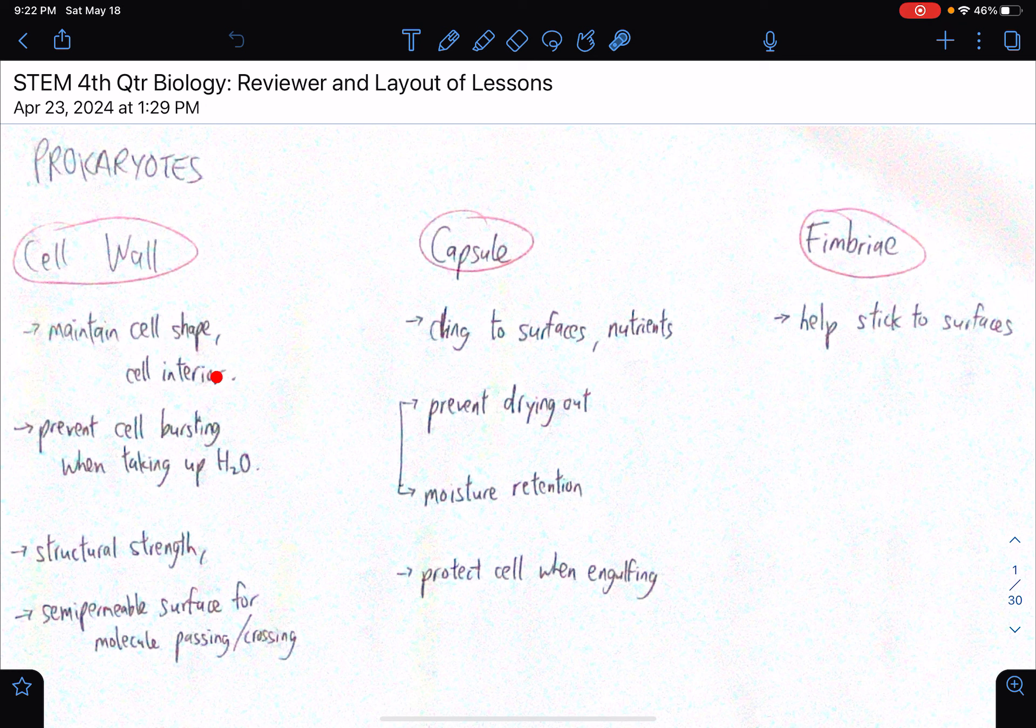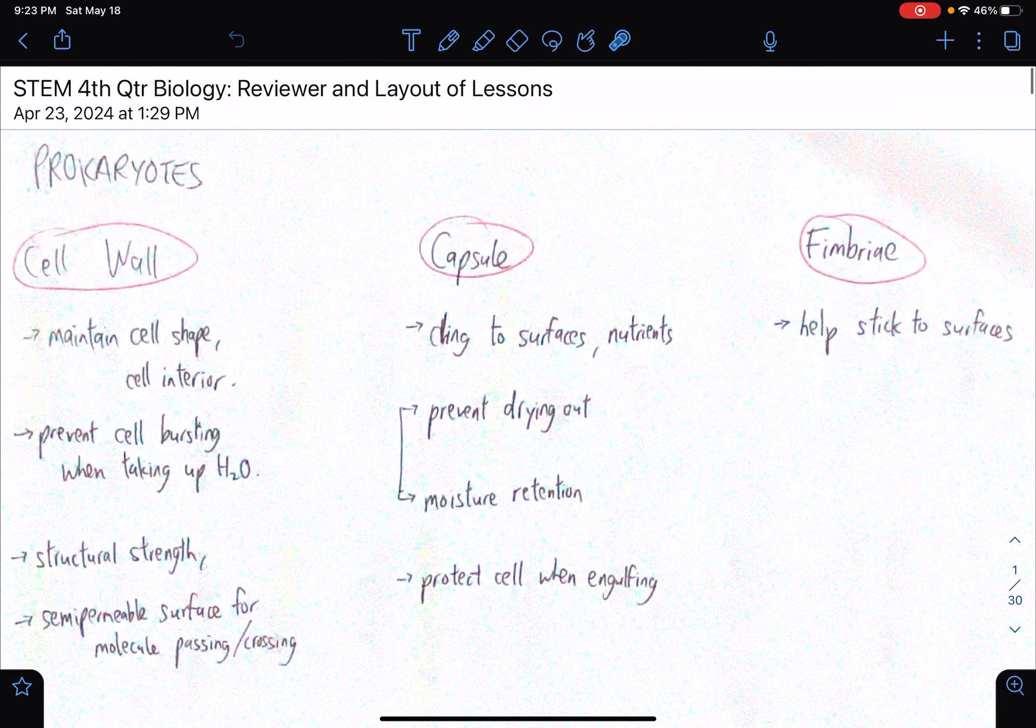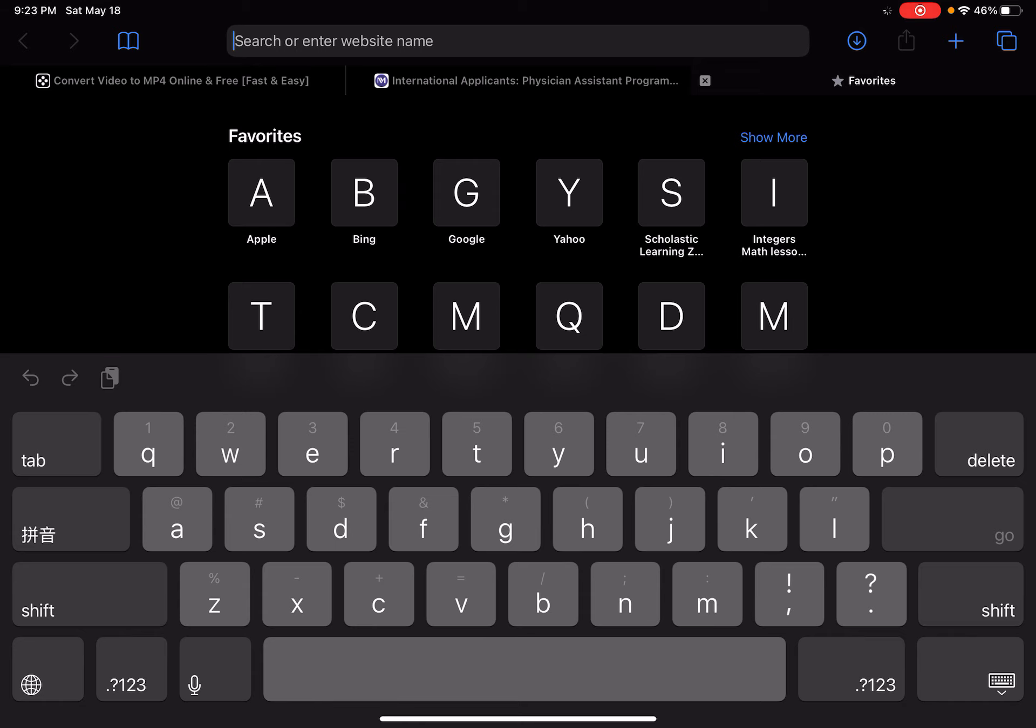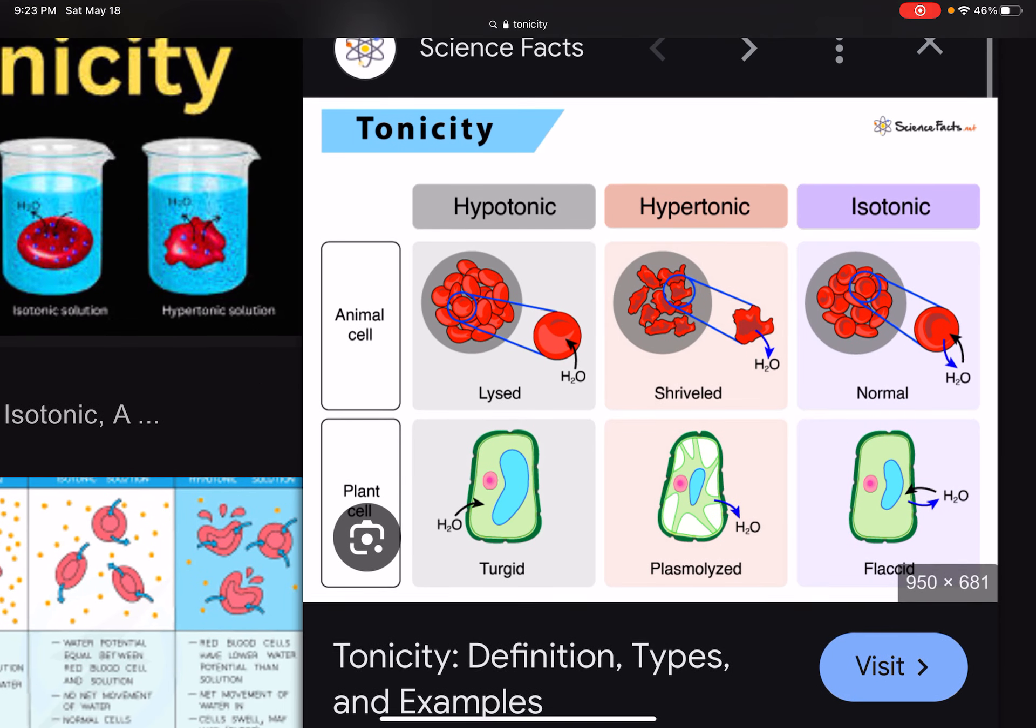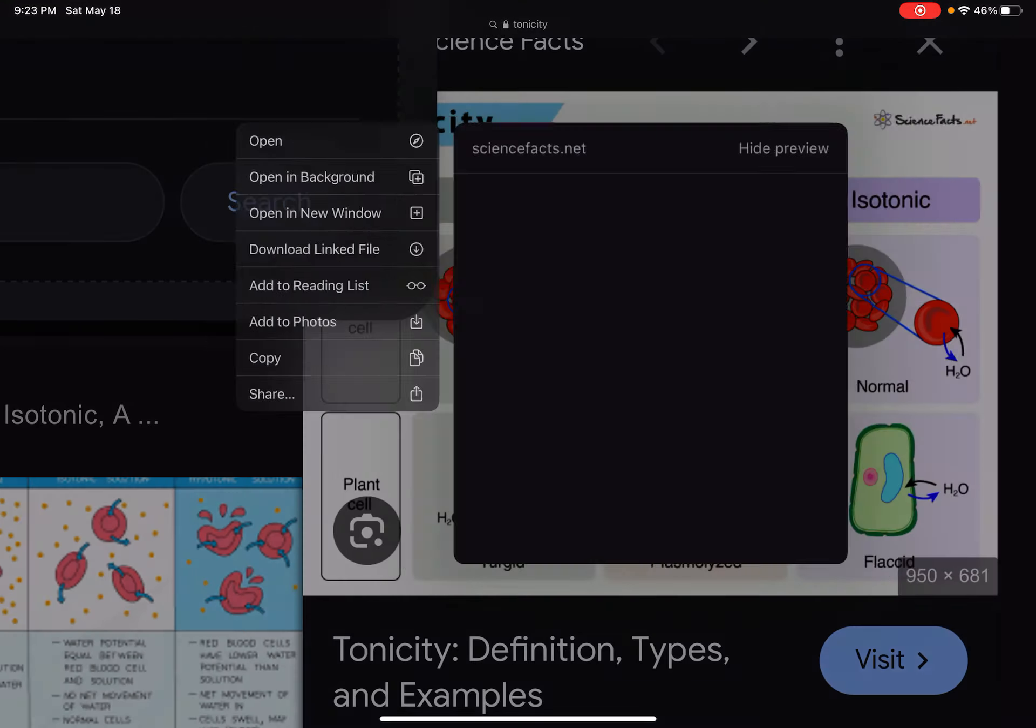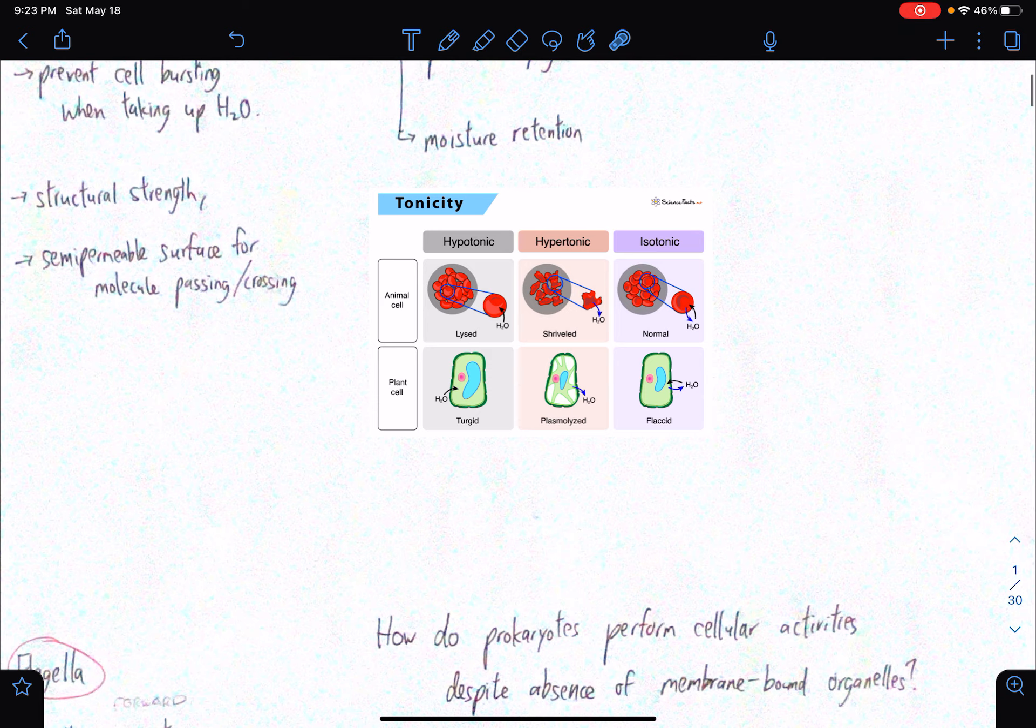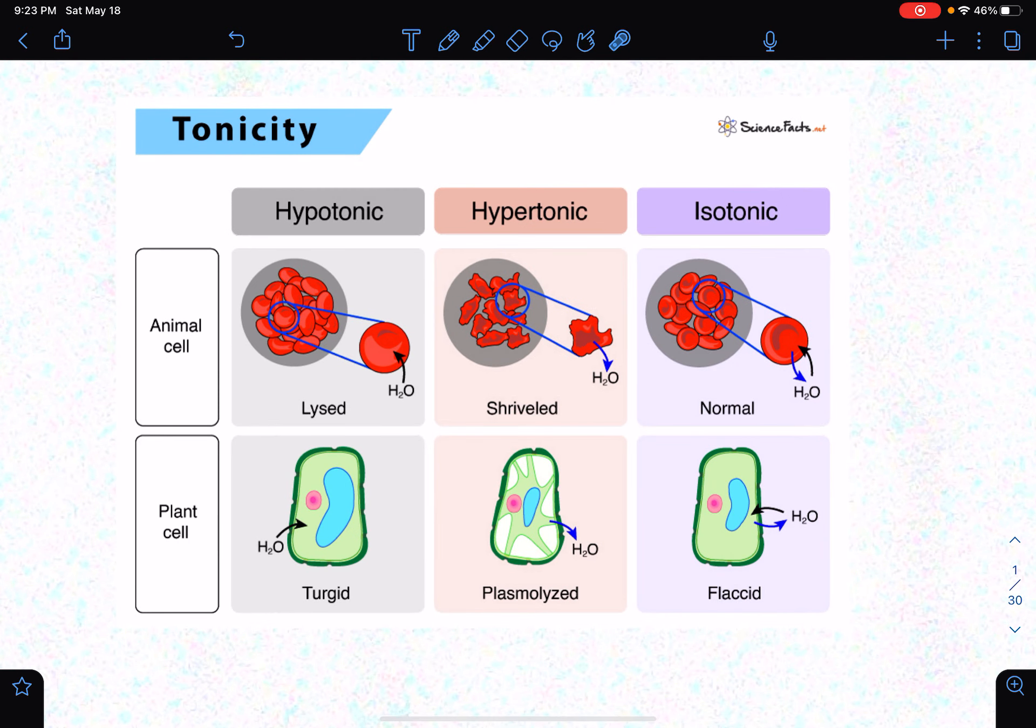Let's start with the cell wall. The cell wall maintains the cell shape and the cell interior. It prevents cell bursting when taking up water. So regarding this, I want to show this to you. Tonicity. That's a word. So basically, in this picture, what's being compared in terms of tonicity is the animal and plant cell. So essentially, for a plant cell, of course there's a cell wall. So it's more likely to survive in extreme environments. So normally, plant cells survive in a hypertonic solution. This is when they are plasmolyzed. But ideally, they're supposed to be exposed to water.